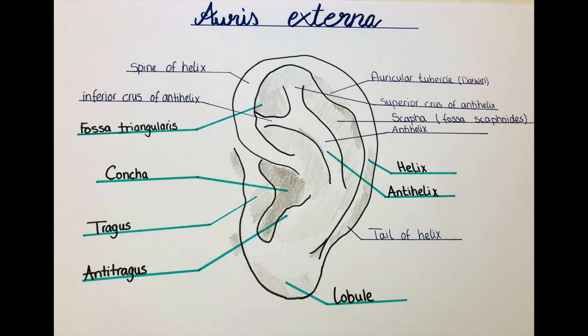Then we have the fossa triangularis, which lies between the superior and the inferior crura of the antihelix. Then the concha as mentioned before — the entry into the external acoustic meatus — and the tragus, the antitragus, and the lobule.